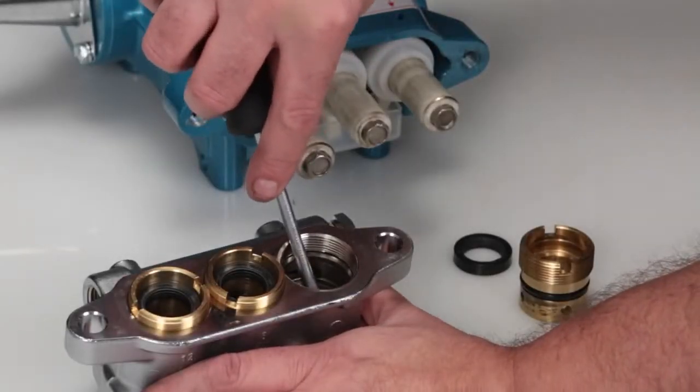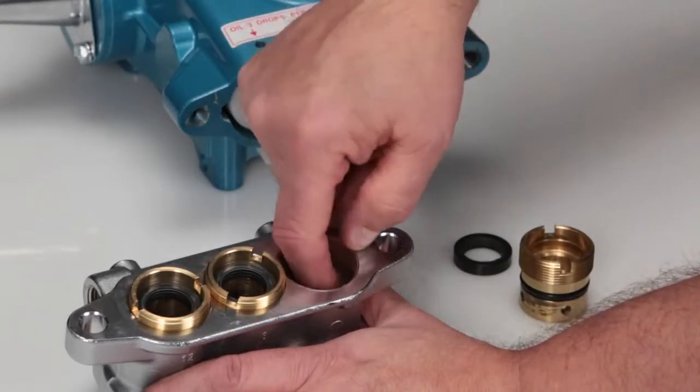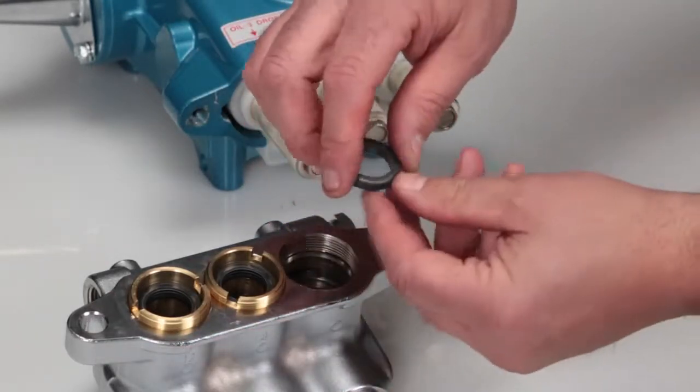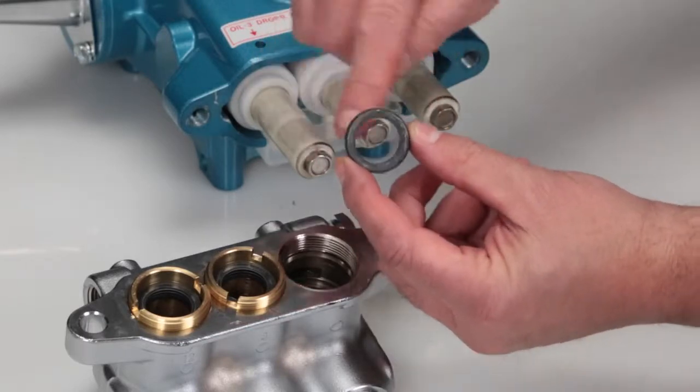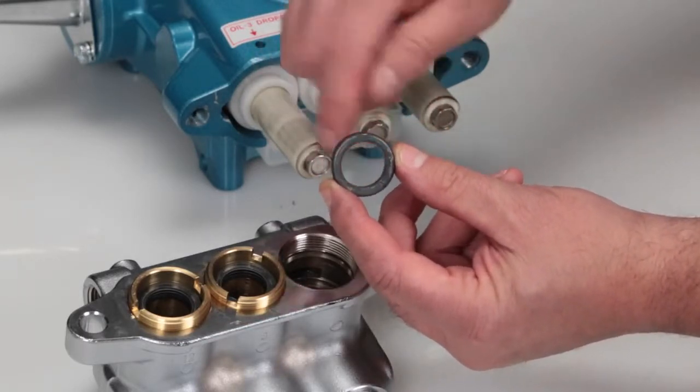Place a flat tip screwdriver under the high pressure seal and pry upward to remove. Ensure you do not score the inside of the manifold. Inspect the inside and outside of the high pressure seal for excessive wear or damage.